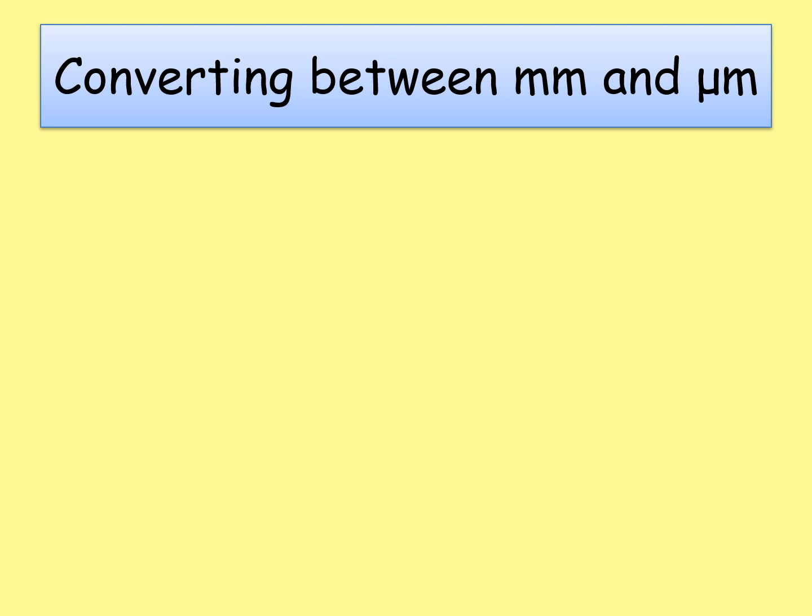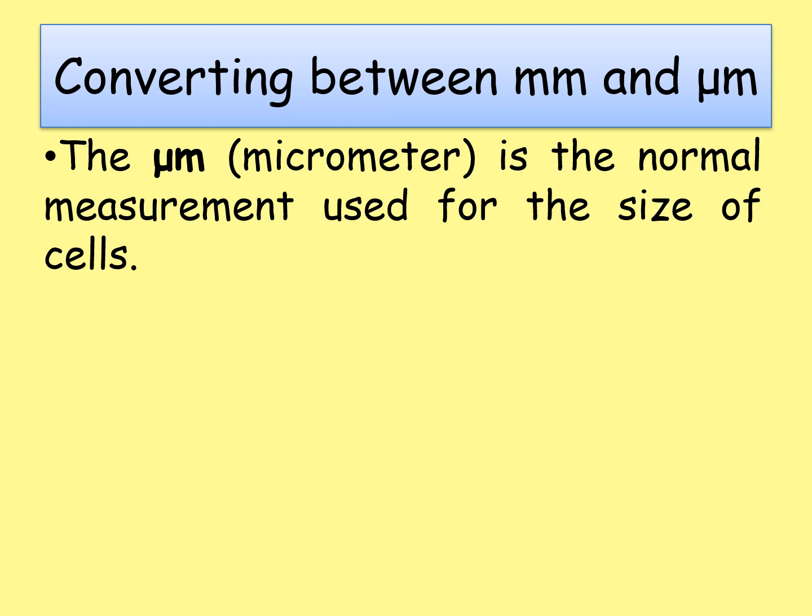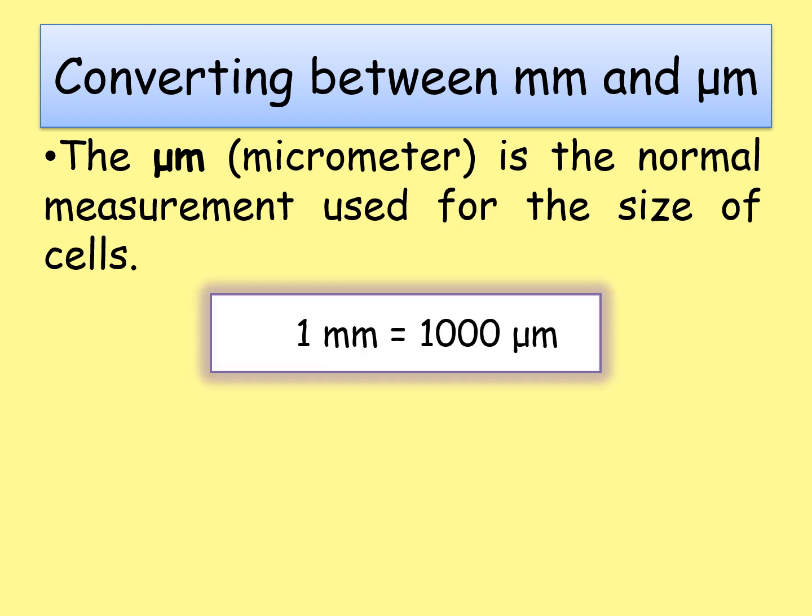Let's get started on the first skill — how to convert between millimetres and micrometres. Micrometres is the normal unit used for measuring the size of cells because they're so small, but measurements can also be given to you in millimetres. Millimetres and micrometres have a really nice neat relationship: one millimetre is equal to 1000 micrometres, and you will be told that in the stem of the question, so don't worry about remembering it.